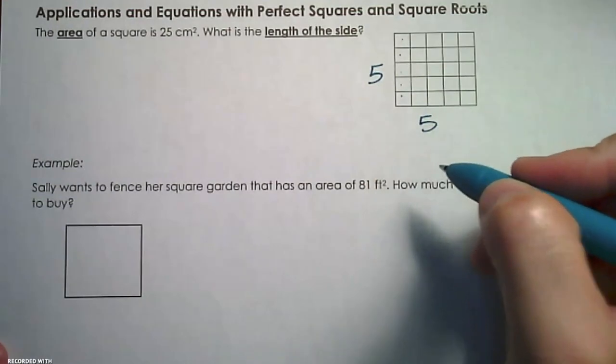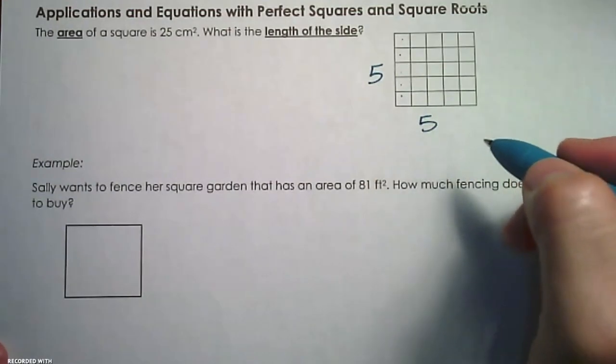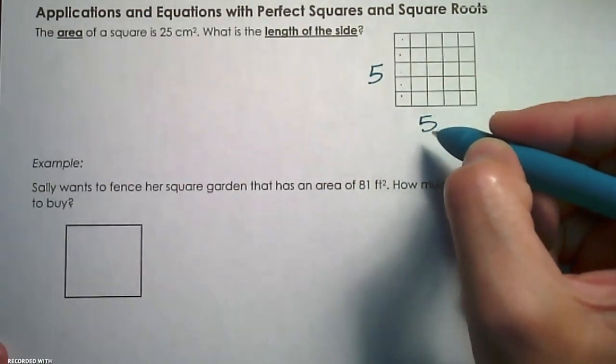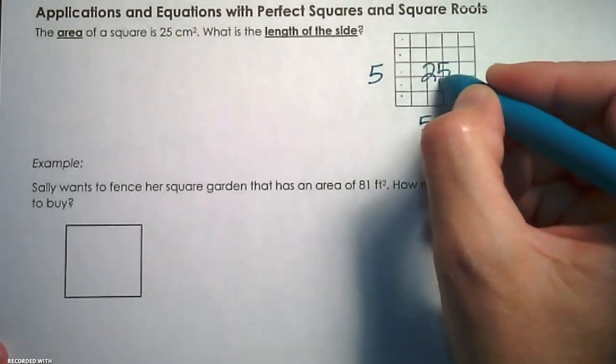Let's work backward and think, what do I do with the length and the width of the two sides to get the area? Well, if I take one side length and I multiply it by itself, because those sides are congruent, I'm going to get the area of 25.